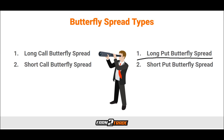Next, we have the long put butterfly spread, which includes the purchase of a put option with a strike price below the asset price, writing two at-the-money put options, and then purchasing a put option with the strike price above the asset price — referred to as in-the-money. In this scenario, the best outcome would be if the asset price expires at the same price as the at-the-money puts, enabling the investor to take advantage of the time value while maximizing in-the-money value. The out-of-the-money put option is simply an insurance policy in case the asset price collapses. Thus, the initial strategy creates a net debit.